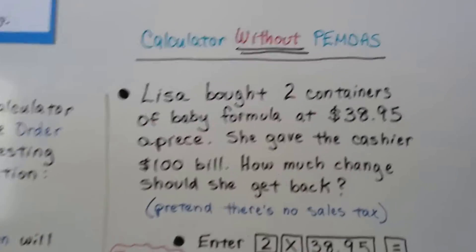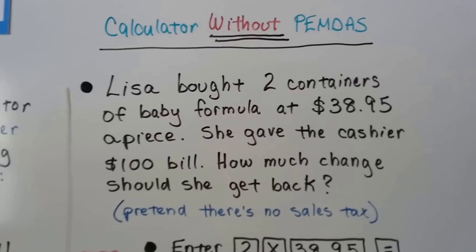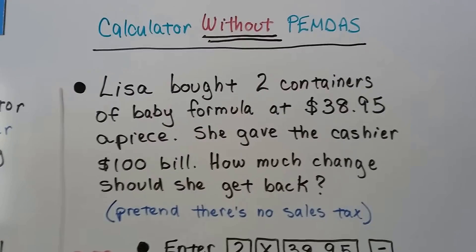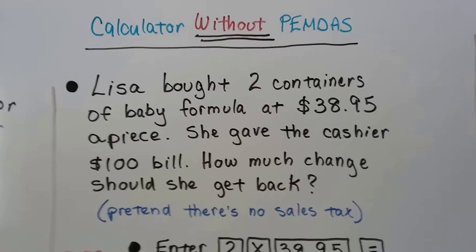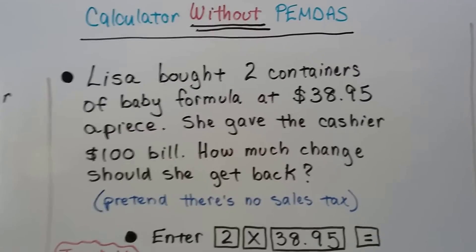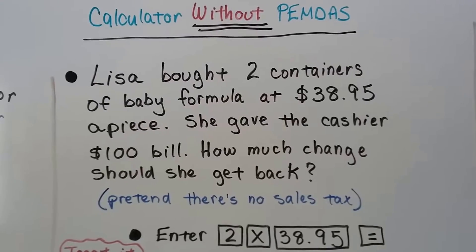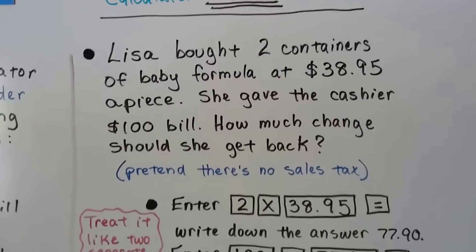So, this is using a calculator without PEMDAS. Lisa bought 2 containers of baby formula at $38.95 a piece. She gave the cashier a $100 bill. How much change should she get back? Now we're going to pretend there's no sales tax. We're just going to do the $38.95 that she bought 2 containers at that price and she gave a $100 bill.